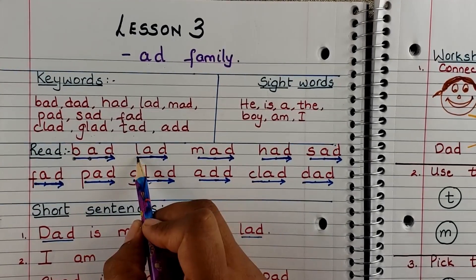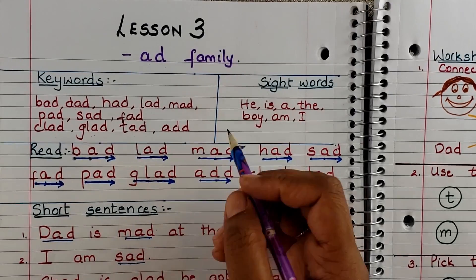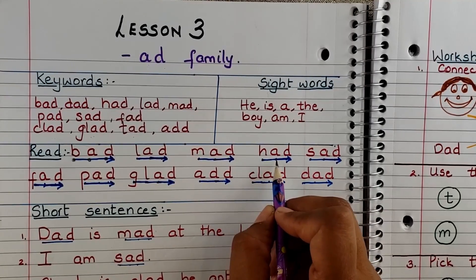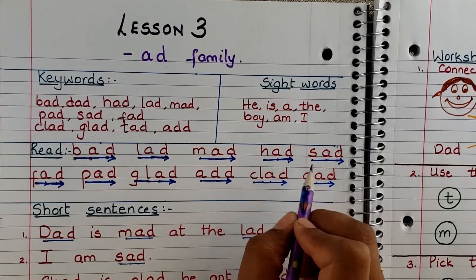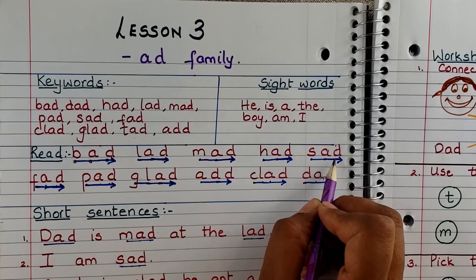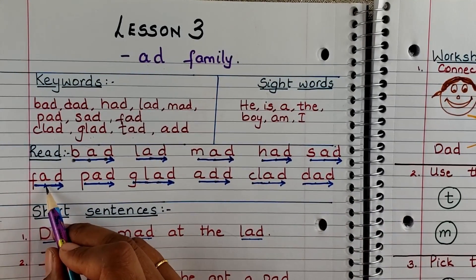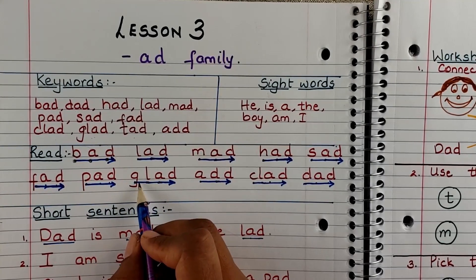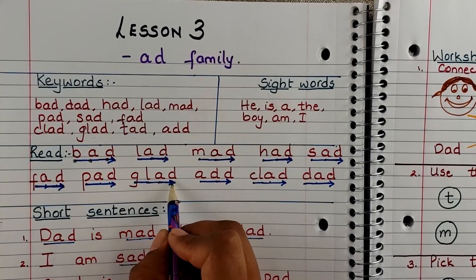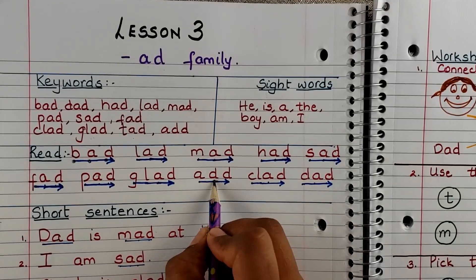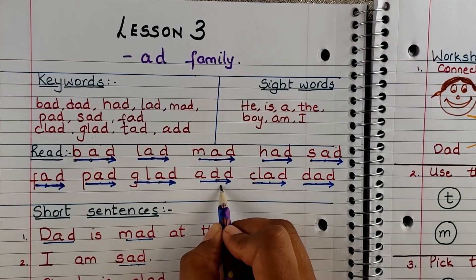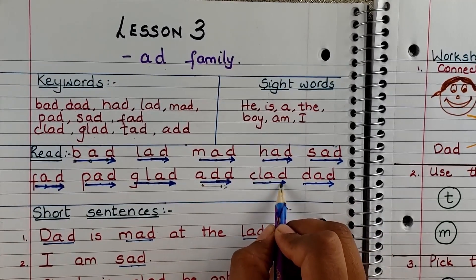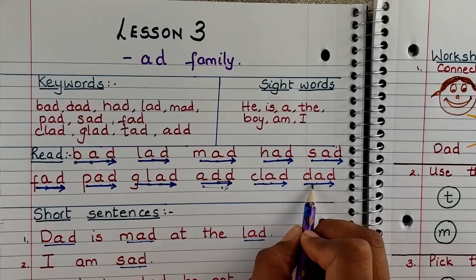Bad, mad, had, sad, pad, glad. A-D — these two are one sound. So it's A-D. Cl-A-D, clad. D-A-D, dad.